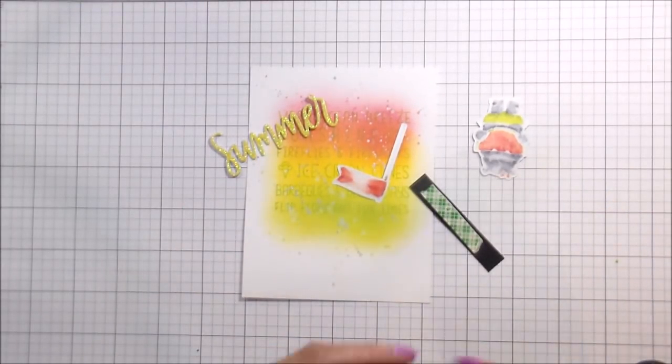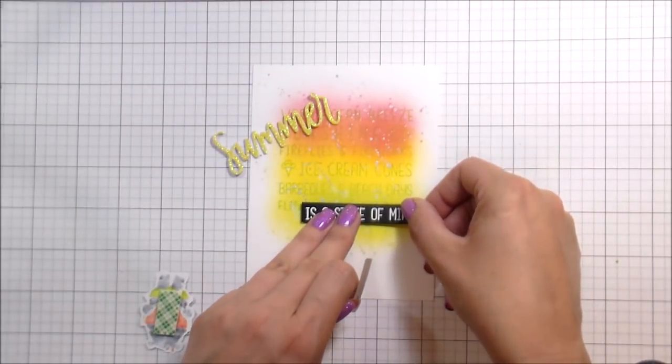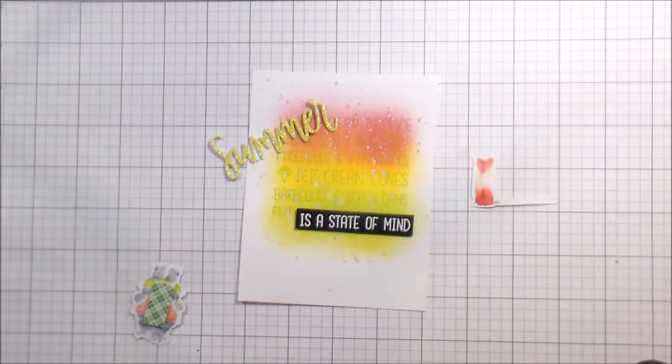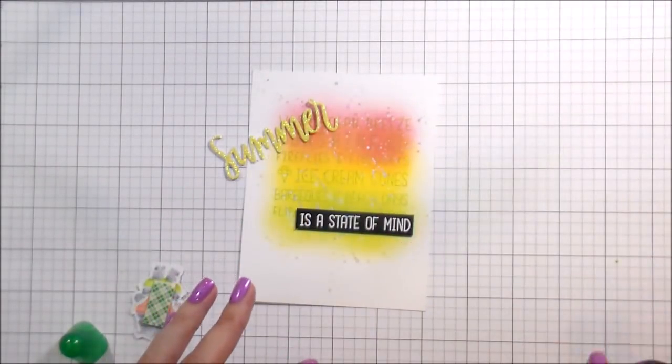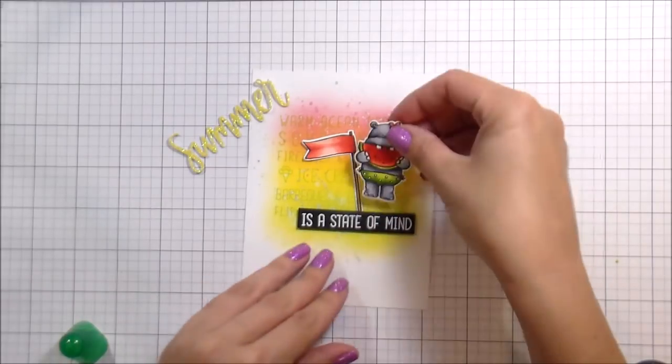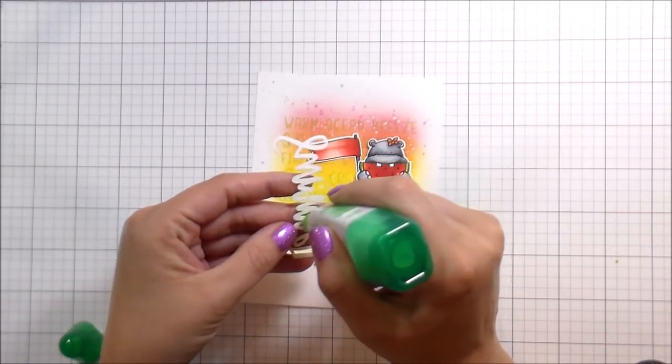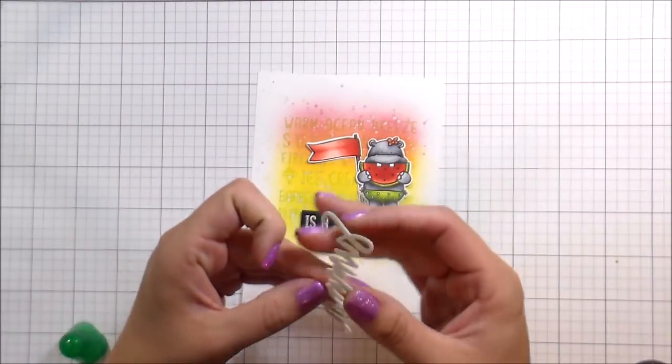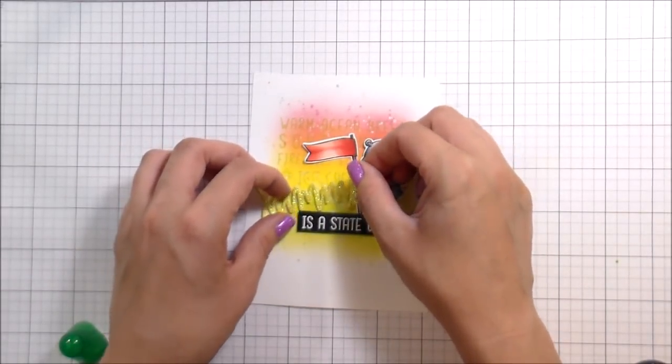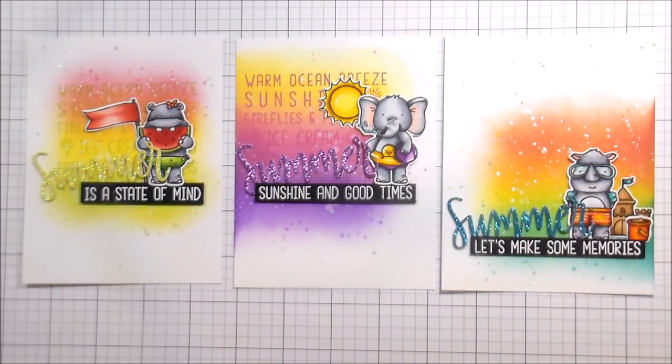Now for putting them together, the sentiment portion that we heat embossed, the little label, is going to be popped up. The main character is going to be popped up on foam tape, and then whatever accessories they ended up with - the flag, the sun, the sandcastle - all those things are going to be adhered flat so that there is a little bit of distinct dimension between the two. For the word summer, it is popped up a little bit so it has that dimension that we put on there, and then I'm just going to glue that flat and let that dimension be what it is. So these are all three cards. I think that they're super cute and fun for summer. Thank you guys so much for joining me. Make sure you hit up that retirement sale because it's going to go fast and I will catch you on the next video. Bye!